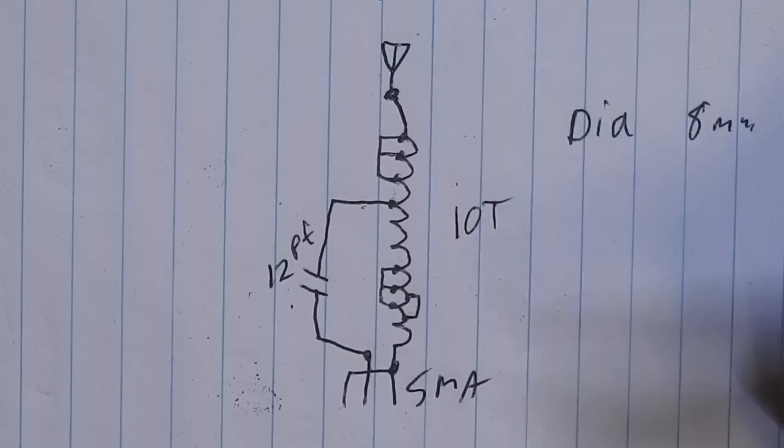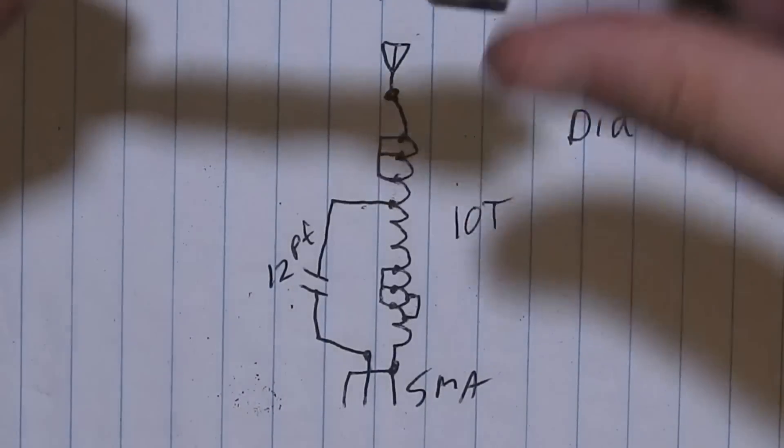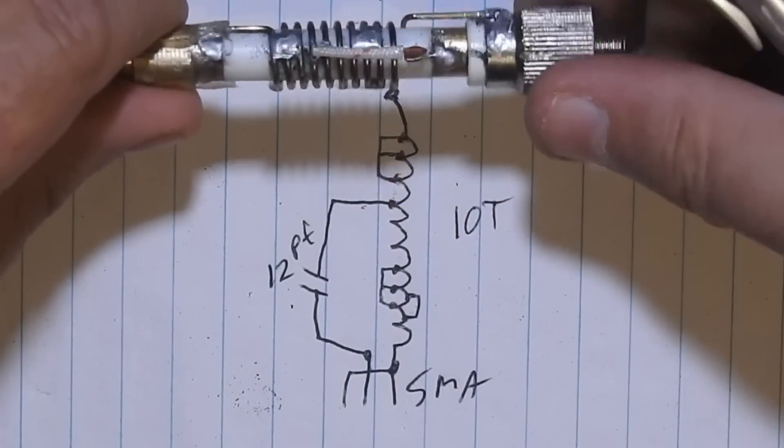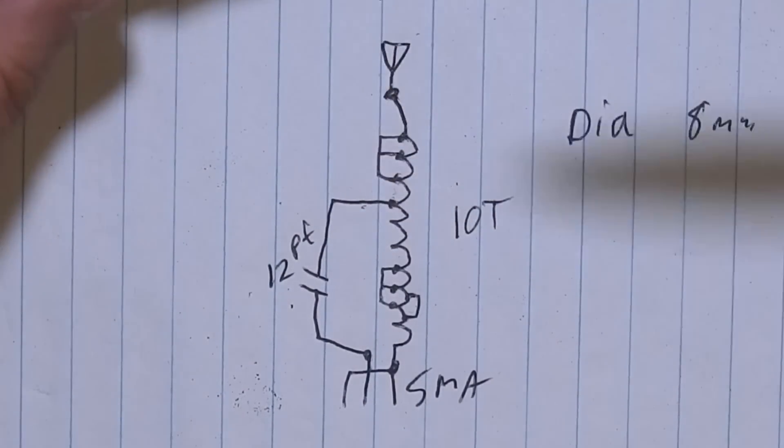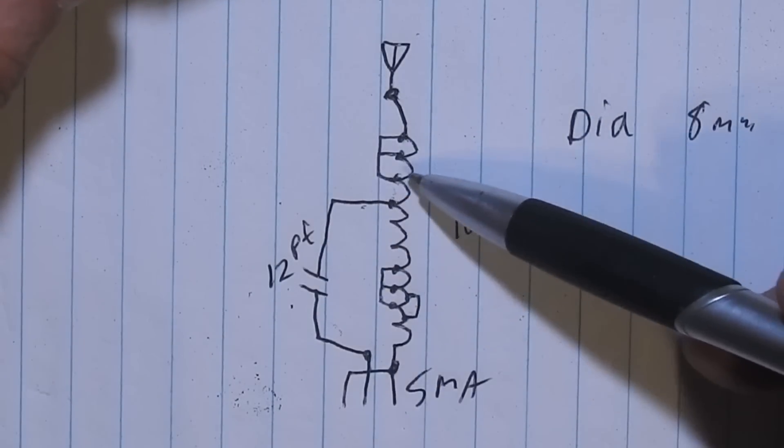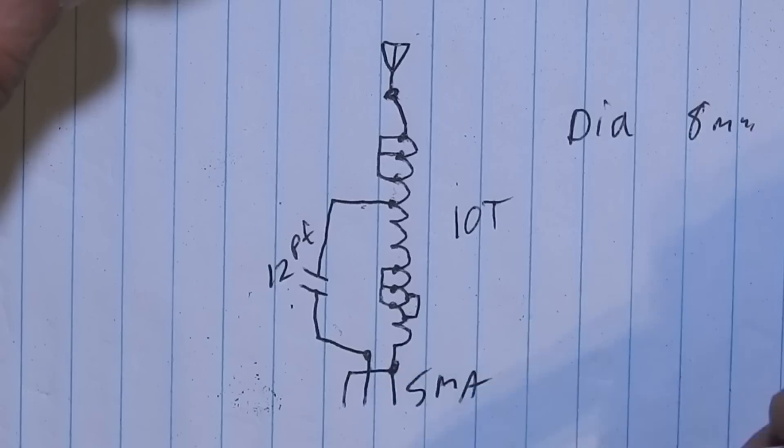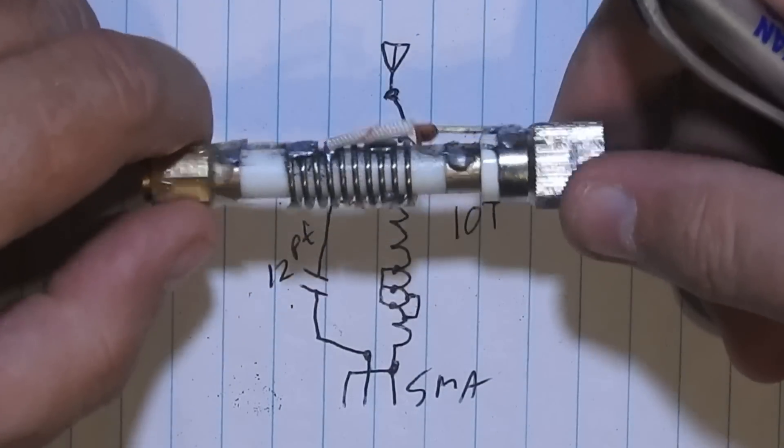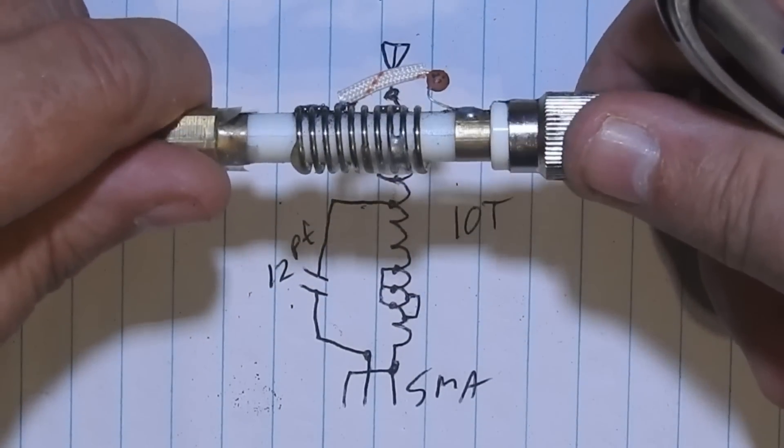I would have thought this would have performed better than it did. Because the RF should be coming right through this capacitor and just have one turn to the antenna. And yet, it did not perform very well.